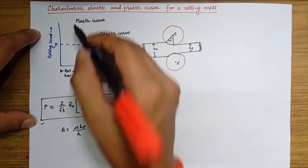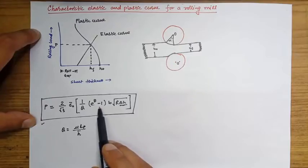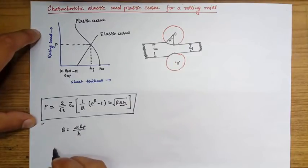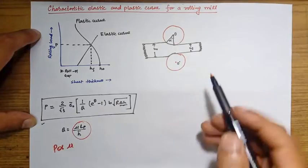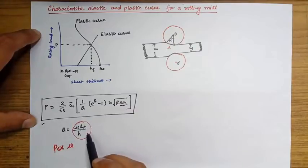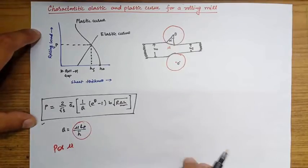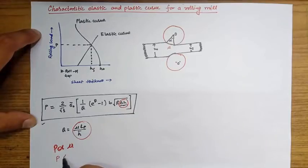This plastic curve follows the equation: P is equal to (2 / √3) × σ naught × (1/Q)^Q × (Q − 1) × B × √(ΔH). P is directly proportional to Q, and Q is directly proportional to mu. So as the friction between the sheet and the roller increases, the rolling load increases. Also, as we increase delta H — if you want to reduce more — the rolling load also increases.